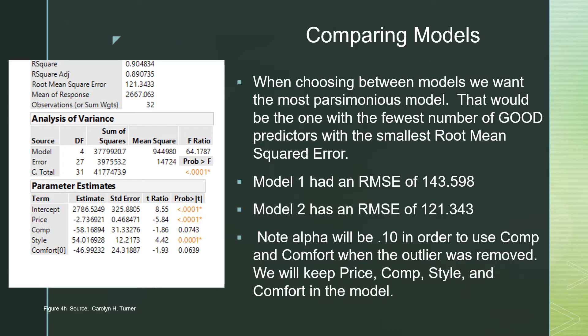We can also test the individual coefficients by looking at the t-ratios for each variable and their probabilities. Price has a t of negative 5.84 with a p-value less than .0001, so it's definitely a good predictor. We're setting alpha at .10 in this model. Competition's p-value of .0743 is less than .10, so we reject H0 and it's a good predictor. The same is true for style and comfort rating.